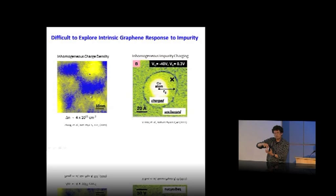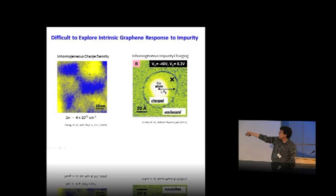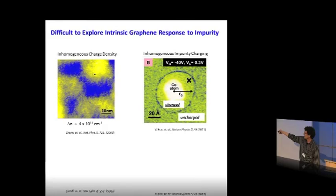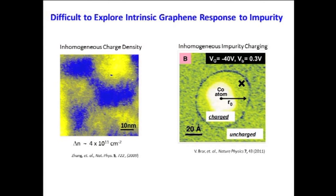Another issue with cobalt atoms is that the impurity has an inhomogeneous charge state. We can set the charge state with the back gate, but when we want to map what the electrons are doing around it, sometimes the STM tip causes the charge state of the atom to switch. This makes it hard to map what's happening around the impurity. You can see this as a ring — what we call an ionization radius. When the STM tip is outside this radius, the atom is in one charge state; when we go inside the radius, it switches to another, because the tip is a movable gate.